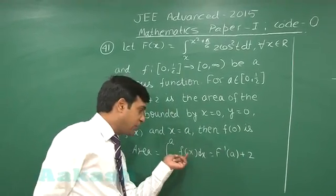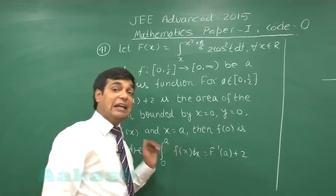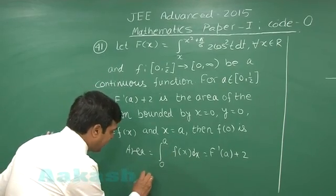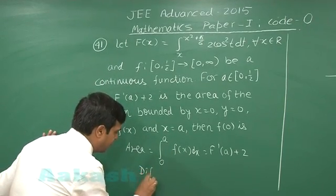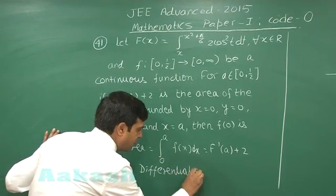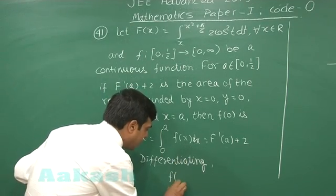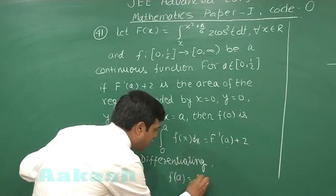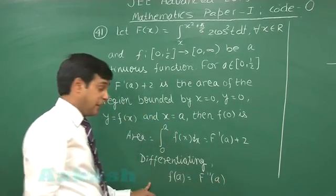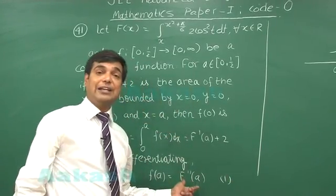Now, what we do in order to take this f outside this integral sign? We apply differentiation. On differentiating this equation on each side, we get small f(a) equals capital F double dash a.